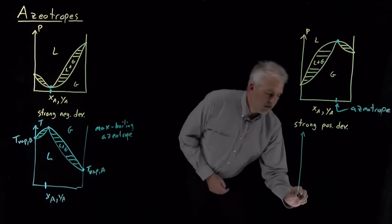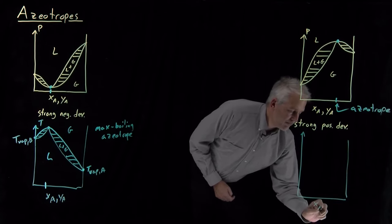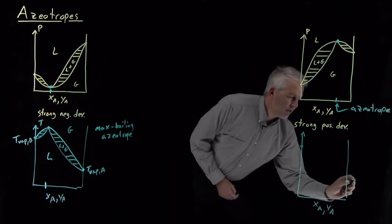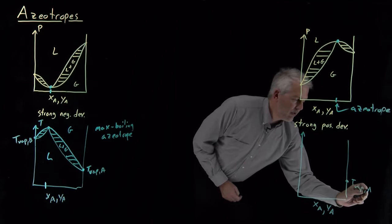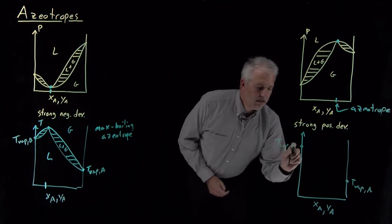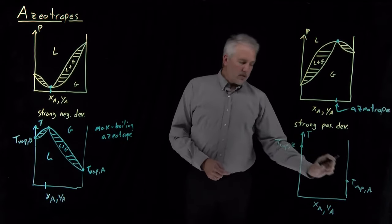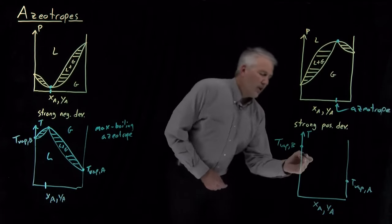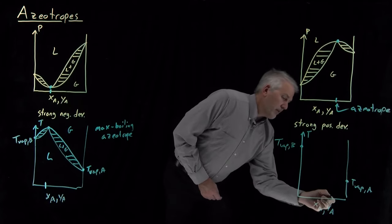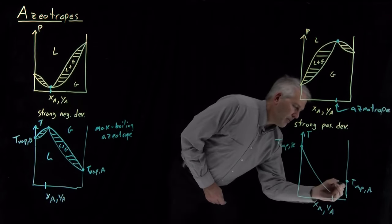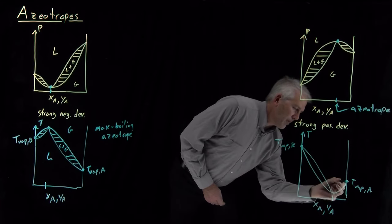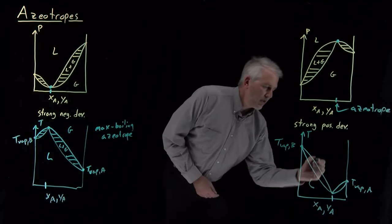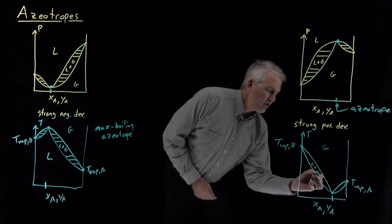If I draw a temperature-composition phase diagram, the more volatile component A will have the lower boiling point. Instead of Raoult's law behavior, the positive deviations in pressure that result in a maximum in vapor pressure will produce, at the same concentration, a minimum in the boiling points — with the bubble point and dew point curves both meeting at that azeotropic composition. Low temperature gives liquid, high temperature gives gas, with phase coexistence between the two.